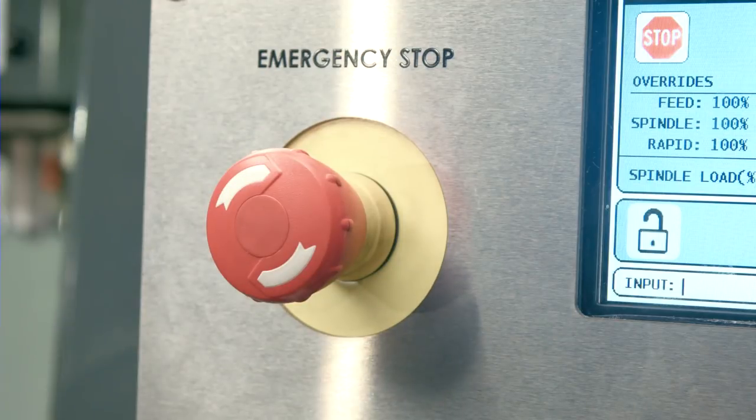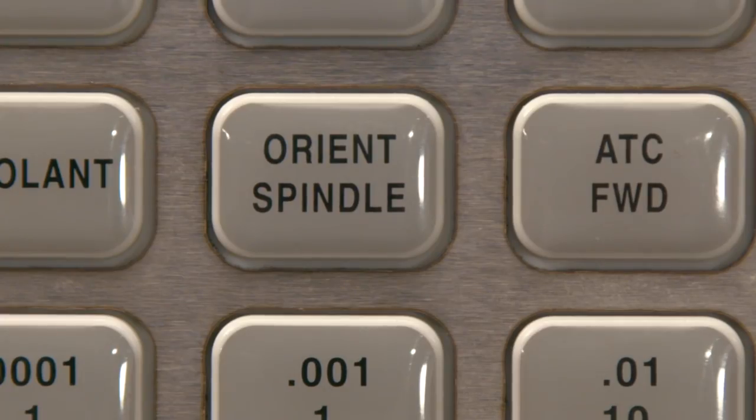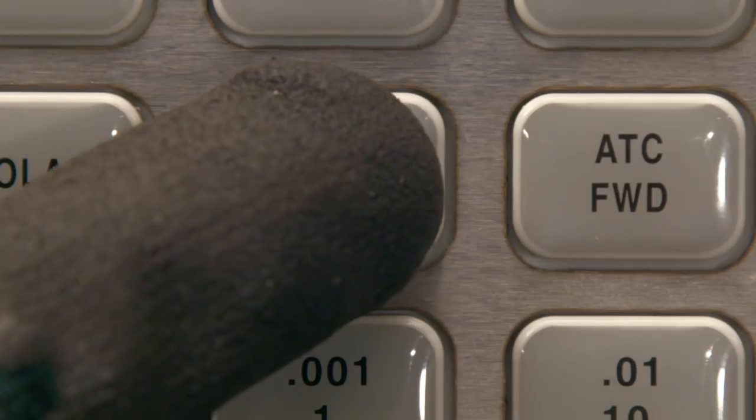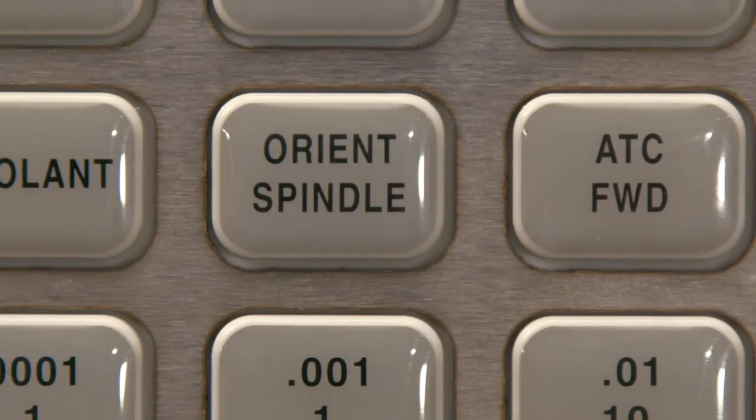Release the e-stop button and press reset a couple times to clear the alarm. Press the spindle orient button. This will orient the spindle to the default position.